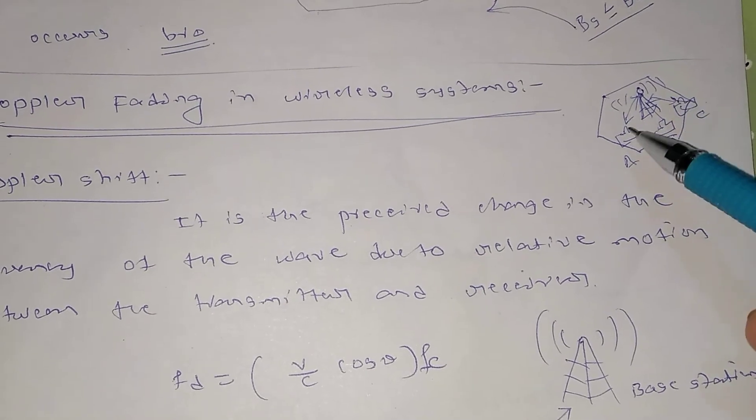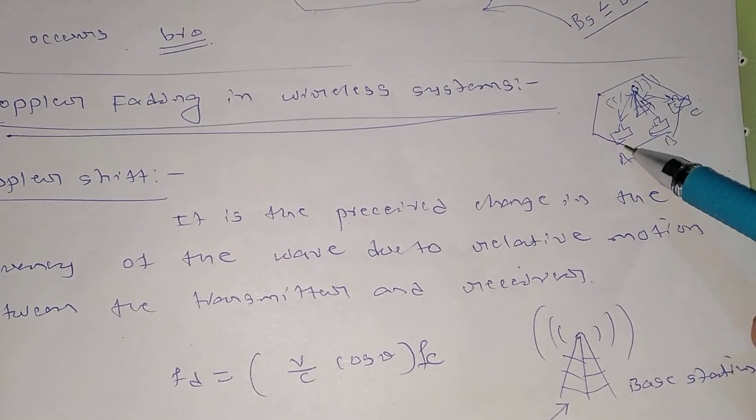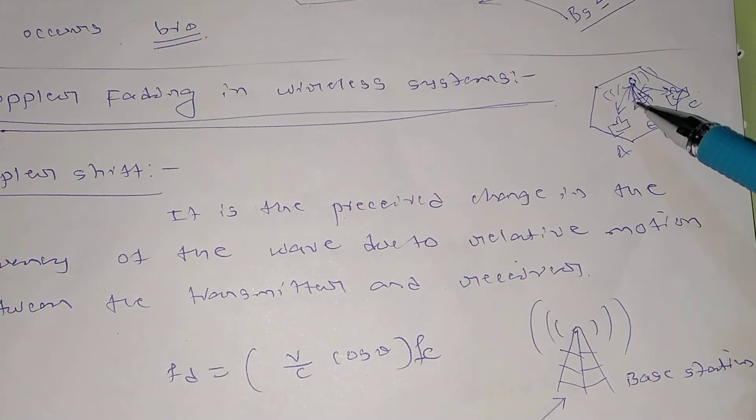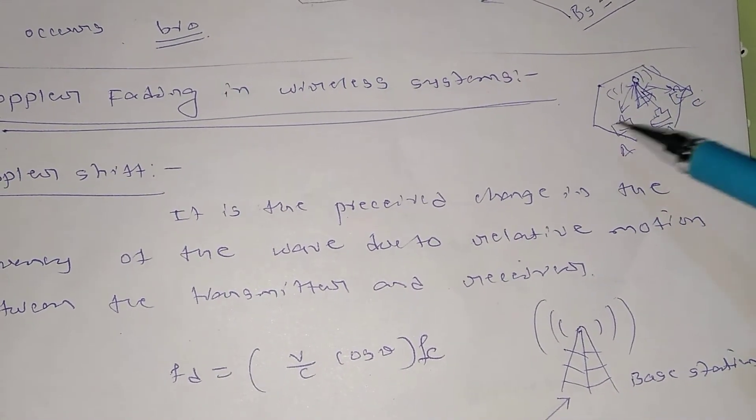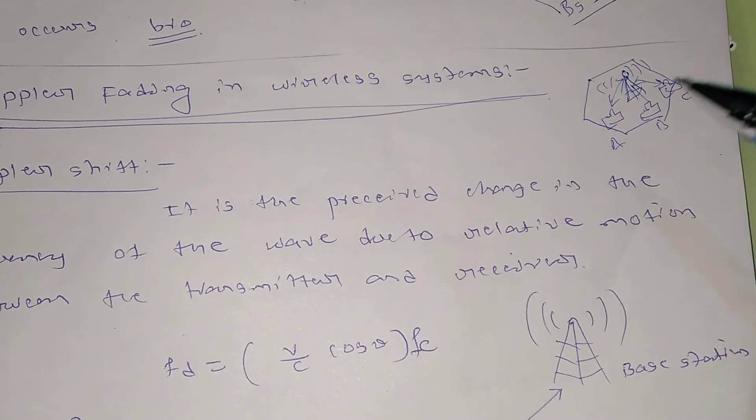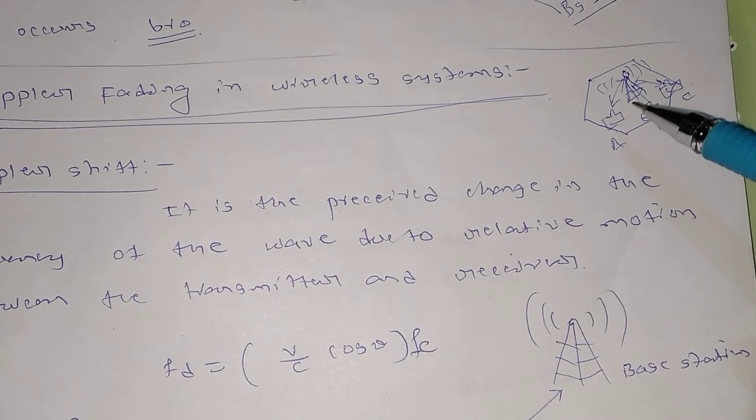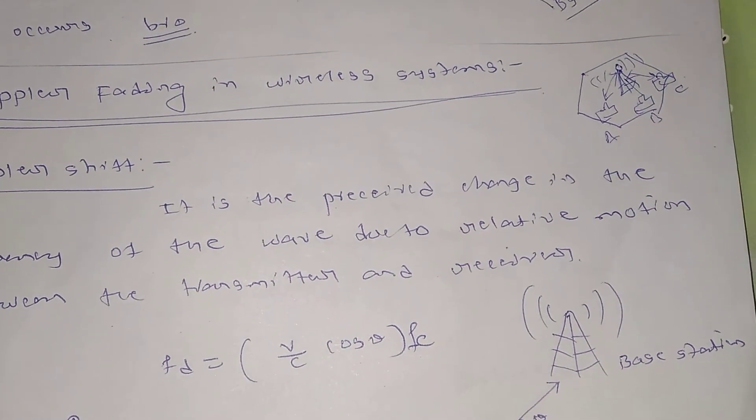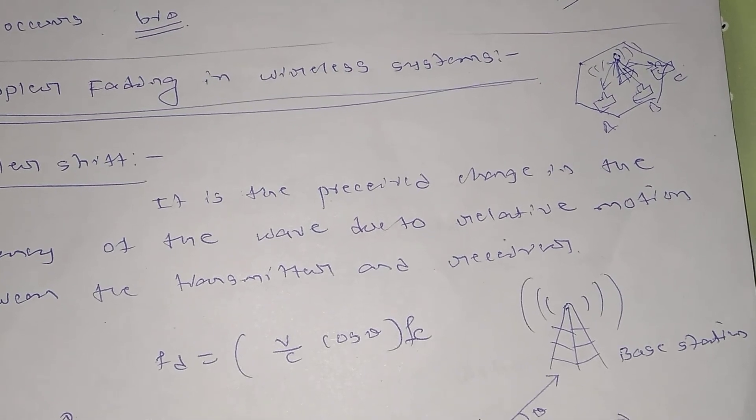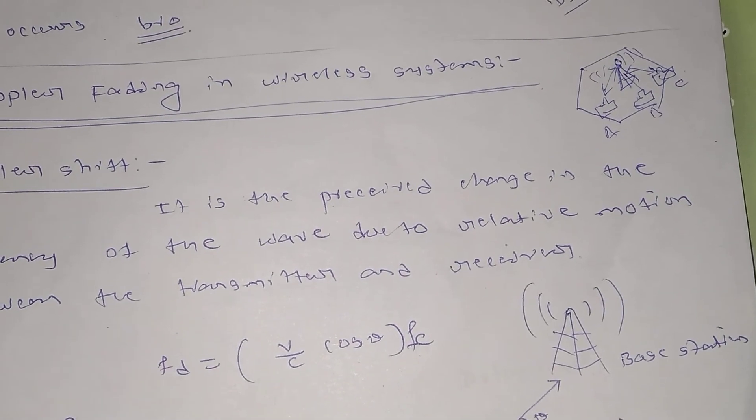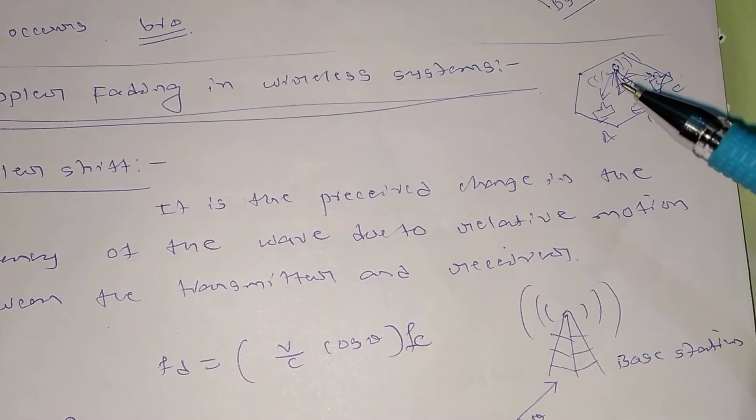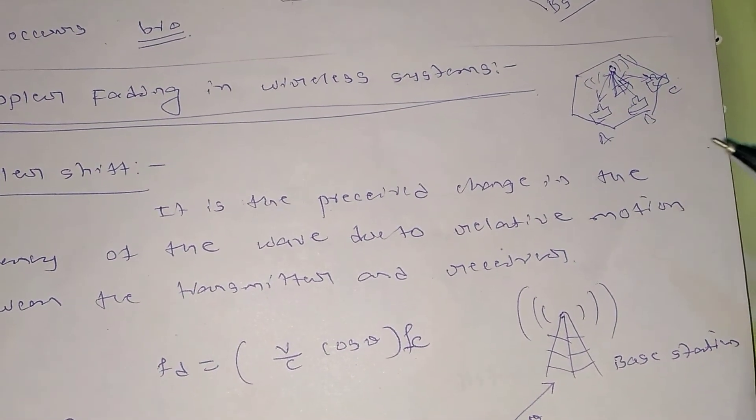Whenever there is a relative motion between the base station and the user, there comes the Doppler fading. That means the signal will lose its strength whenever you will be traveling, and as the speed of your travel becomes more, the fading becomes more. I can say the fading is directly proportional to the speed of the vehicle. That is the basic idea behind Doppler fading, why it occurs and how does it occur.